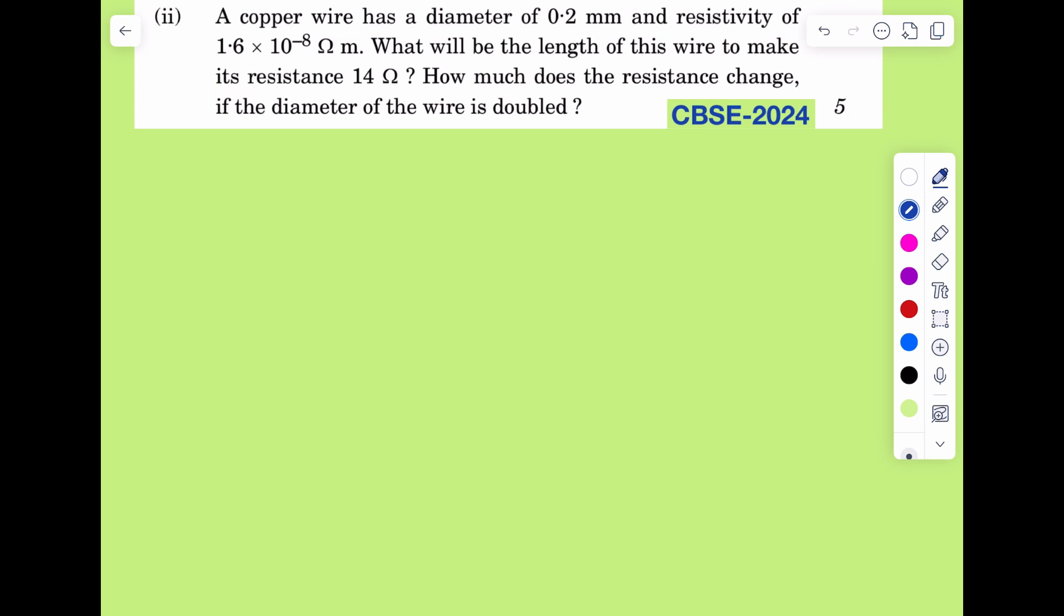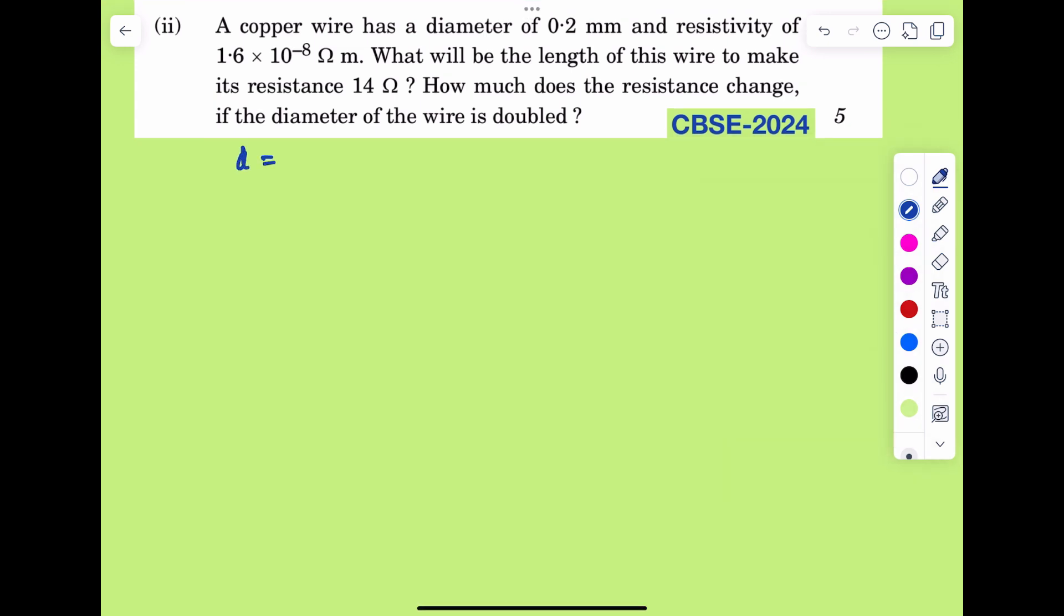Given copper wire has diameter 0.2 mm. This implies the radius of cross section is equal to 0.1 mm, that will be equal to 10 to the power minus 4 meter.